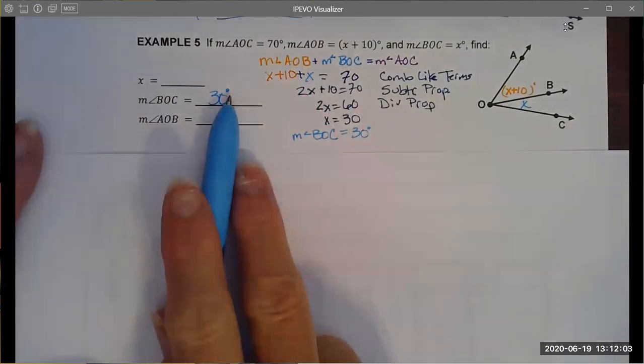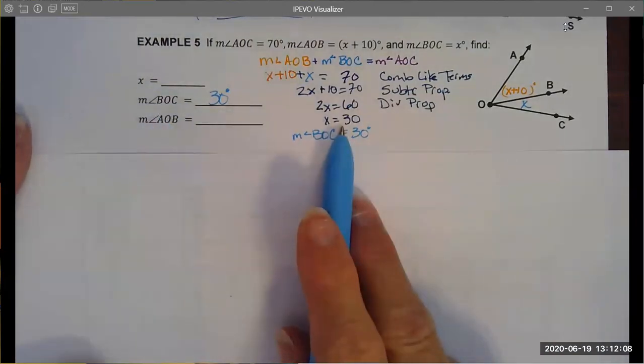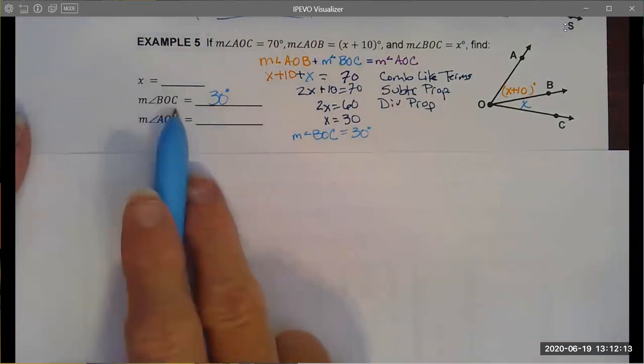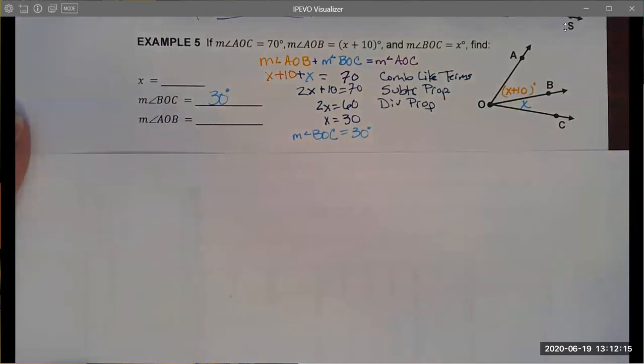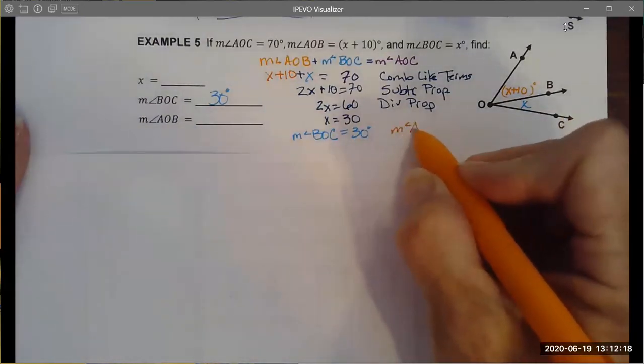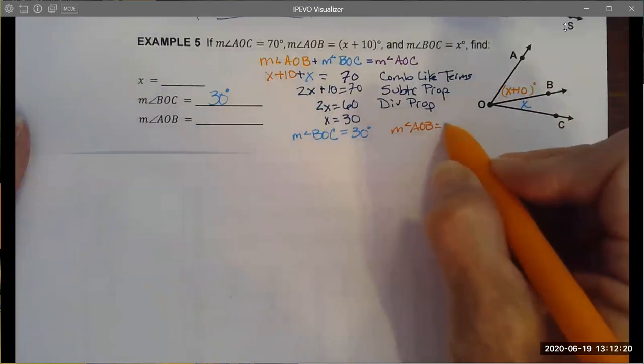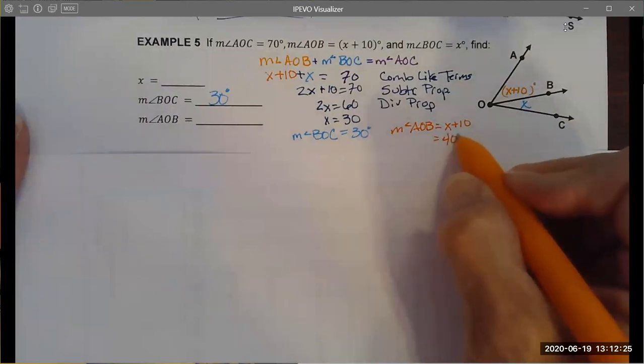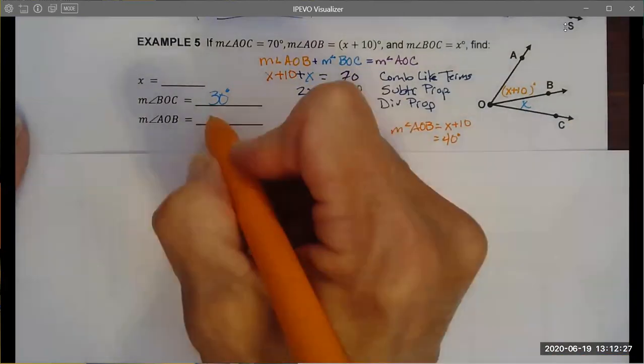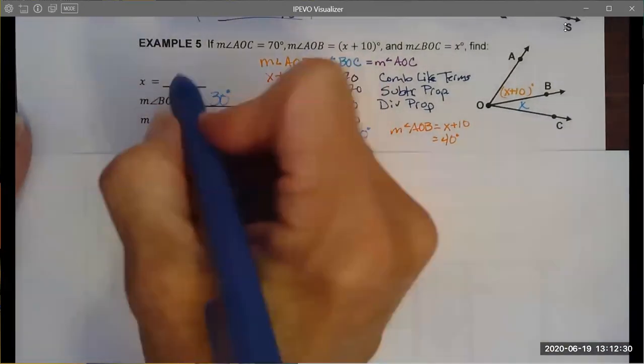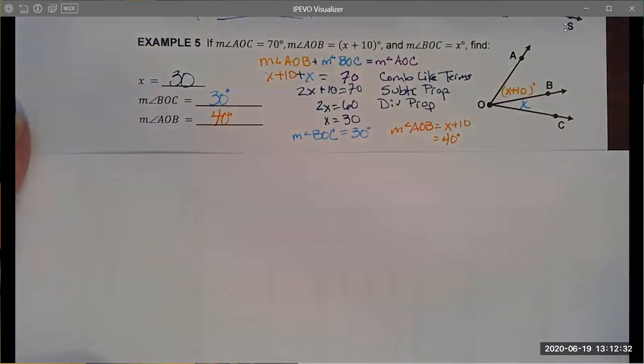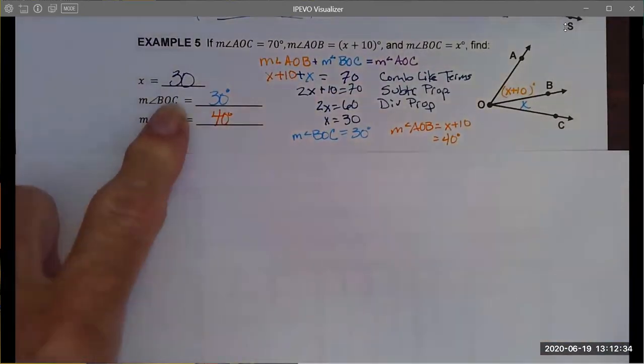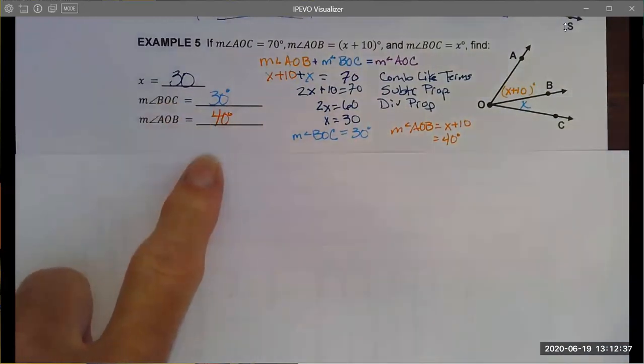You'll want to always remember to put your degree marks if we're talking about the measure of an angle. We do not need degree marks if we're talking about the value of a variable, but because this is the angle I do need those degree marks. I can also find the measure of angle AOB. That was equal to x plus 10. I know that x is 30 so this angle comes out to being 40 degrees, and of course we did have to solve for x so we know that it's 30.